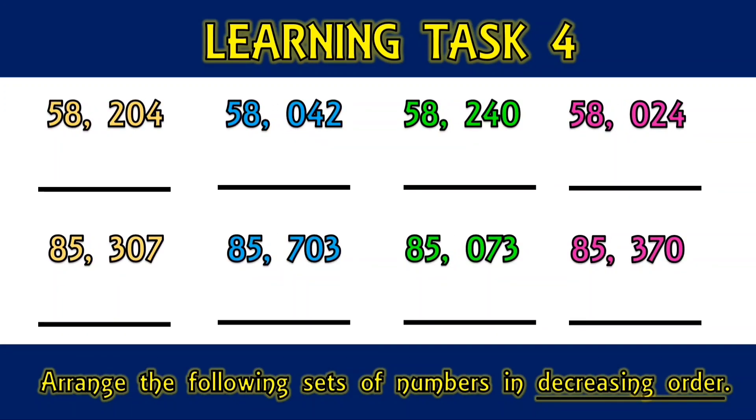Arrange the following set of numbers in decreasing order. Decreasing means to grow progressively less, as in size, amount, number, or intensity. What is the decreasing order of 58,204, 58,042, 58,240, and 58,024?